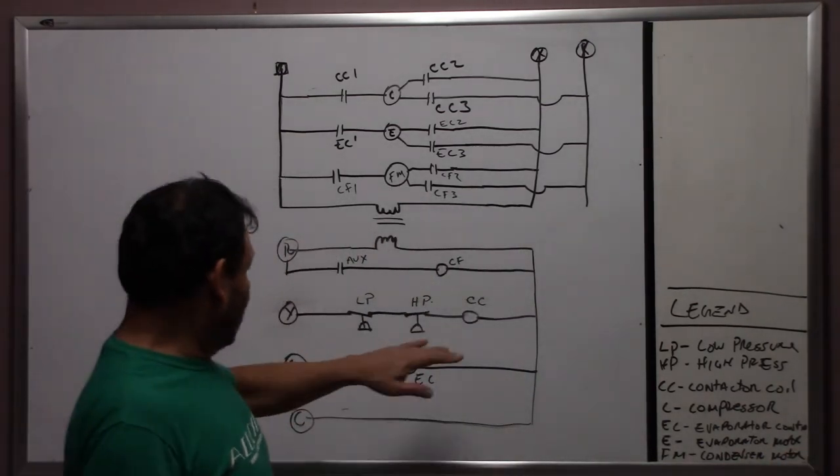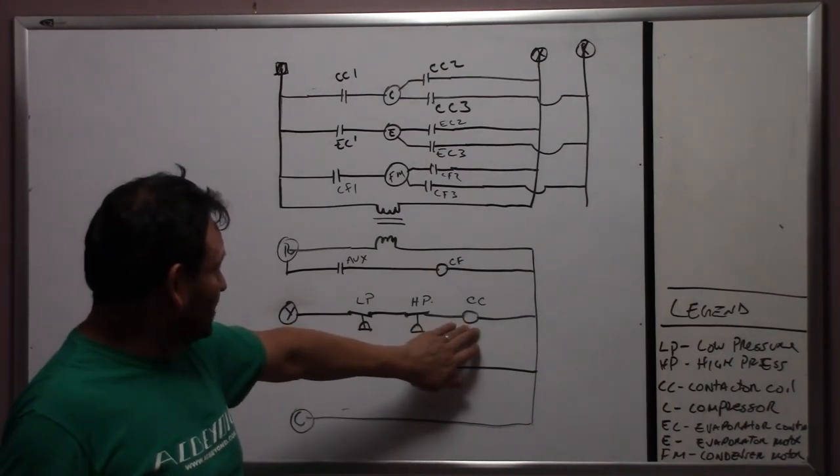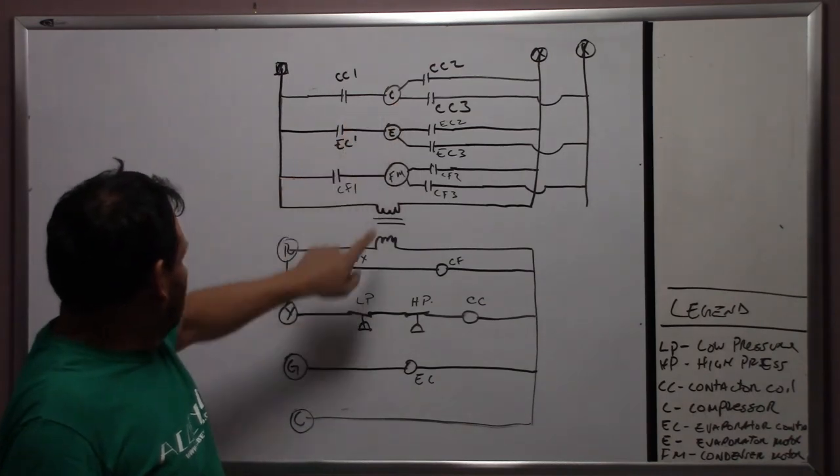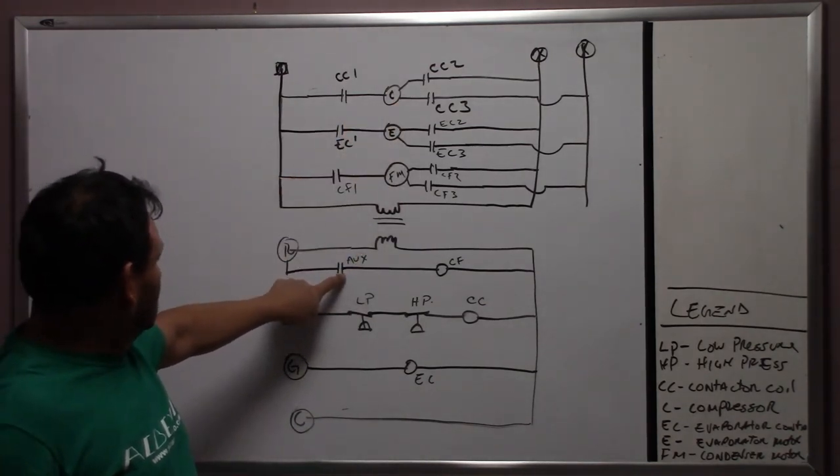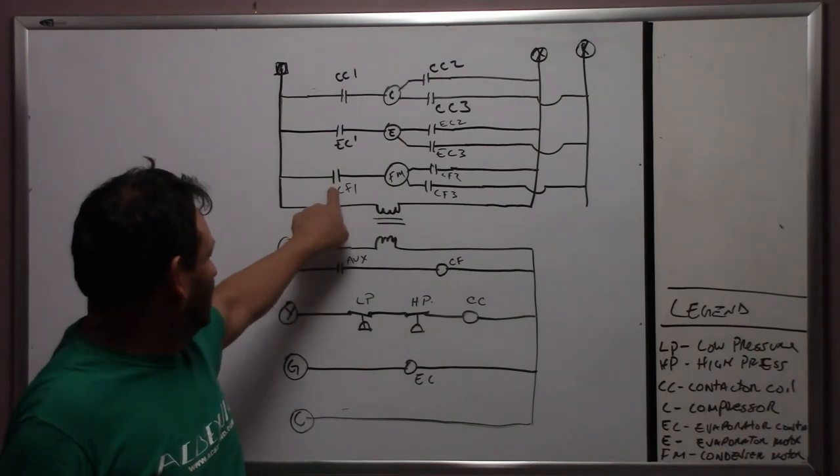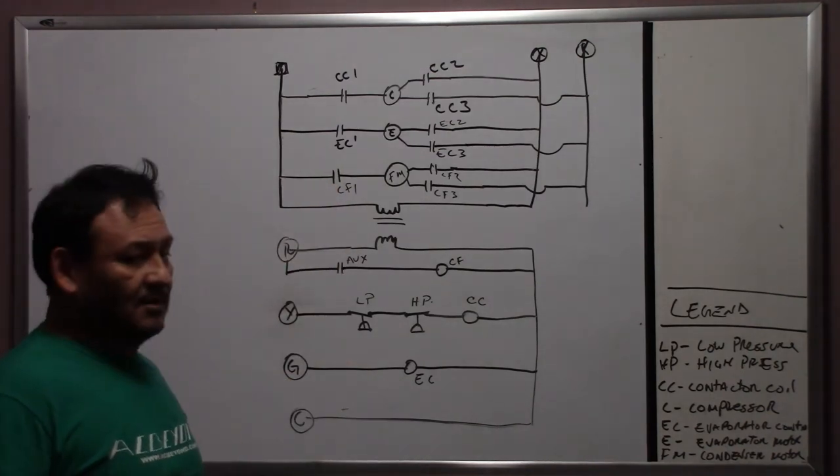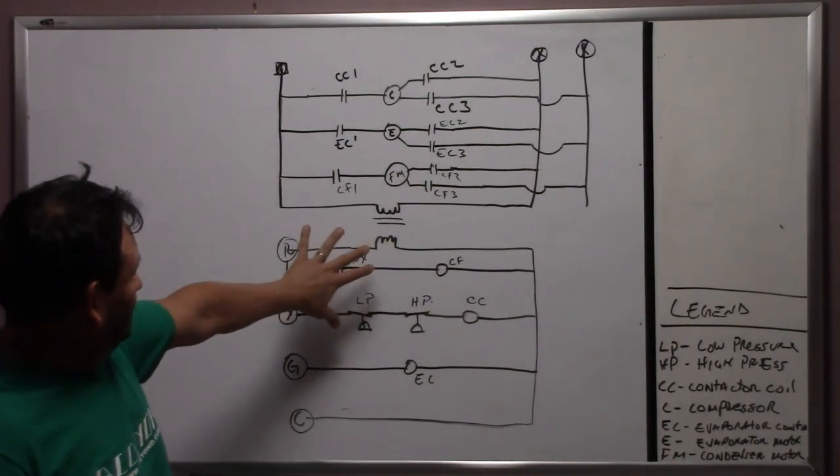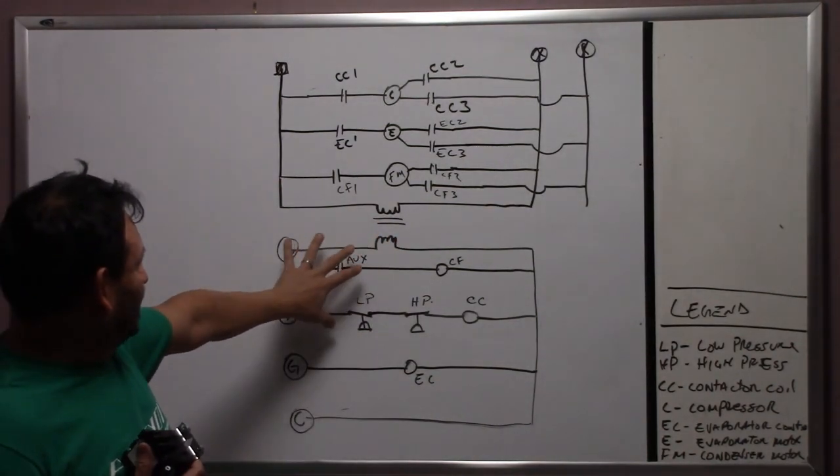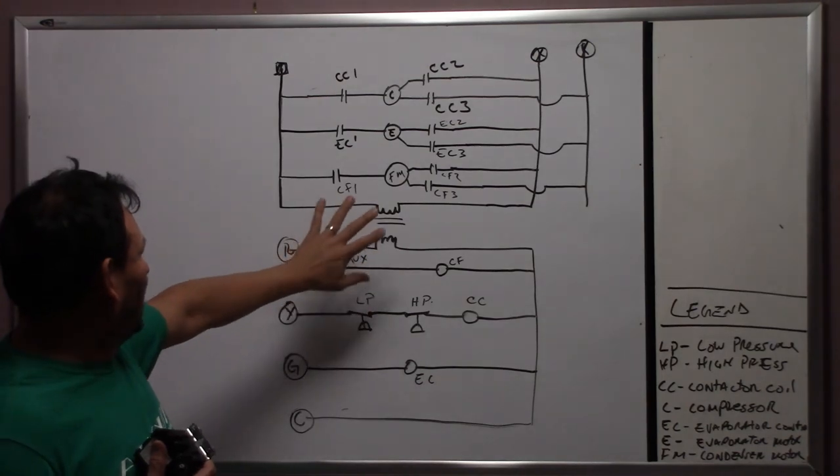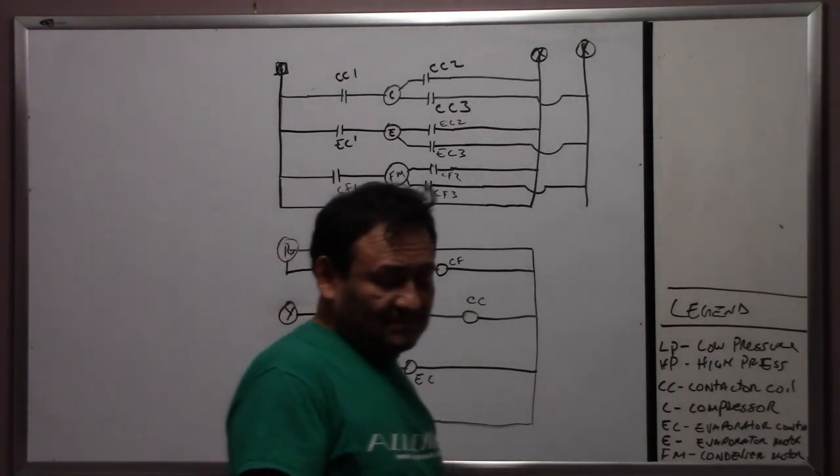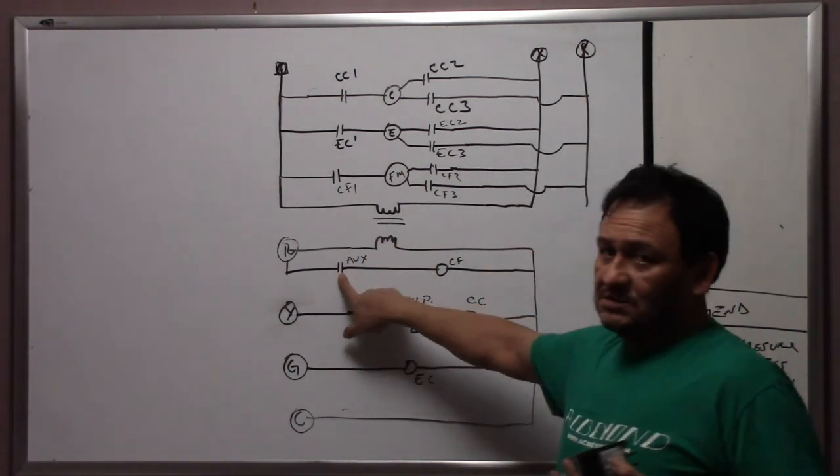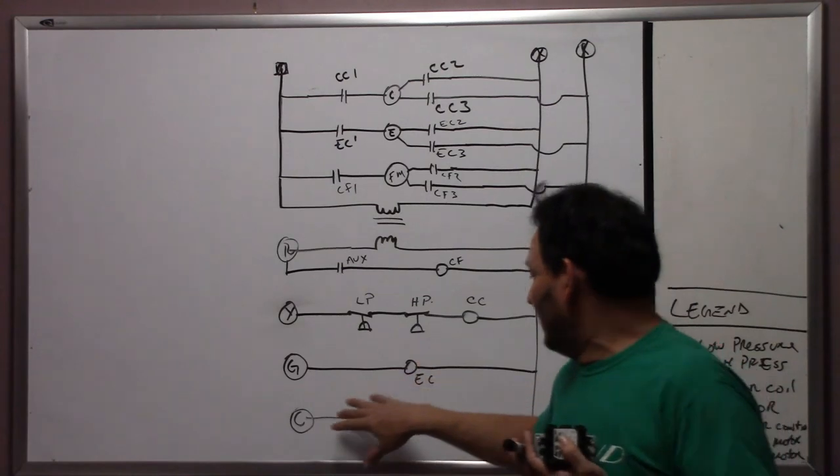So what's going to happen is, like I said before, energize the compressor contactor coil, the compressor comes on, the auxiliaries close, the condenser fan motor comes on. And of course, your evaporator comes on also. But you have to remember that you have to visualize the wiring diagram with no power. You have to think about it, there's no power, so you have to visualize what happens when this closes.